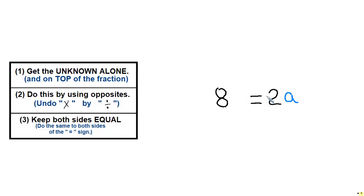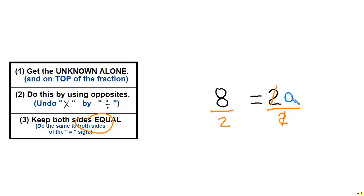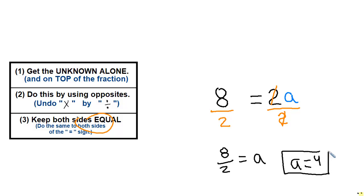Here I have 8 equals 2a. I've got to get a by itself. 2 is next to the a, so I have to get rid of the 2. We're multiplying by 2 — 2 times a — so the opposite of multiply by 2 is divide by 2. Then I do the same thing on both sides to keep them equal, dividing the other side by 2 also. The 2 on top and the 2 on the bottom reduce to 1. Rewriting: 8 over 2 equals a, which is 8 divided by 2 — that's 4. So a equals 4.